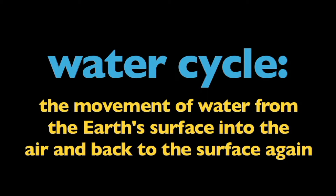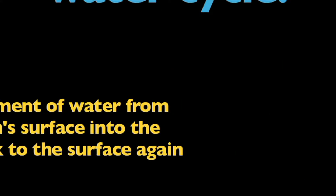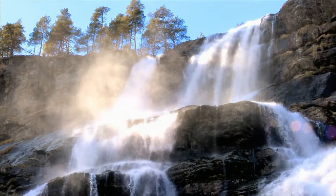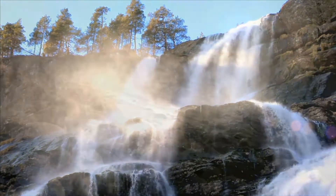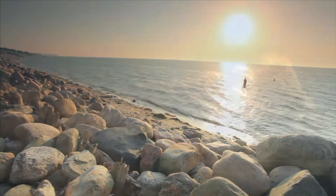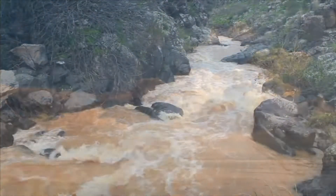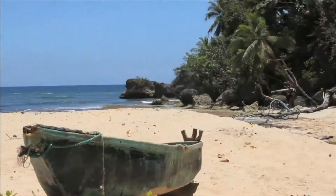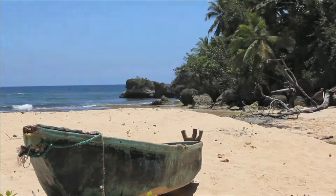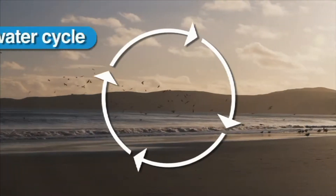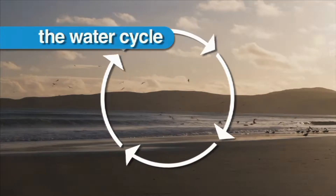In this program, we're going to talk about the water cycle. What is the water cycle? The water cycle is the movement of water from the Earth's surface into the air and back to the surface again. Water on our planet is always moving. Water moves from the oceans, to the clouds, to the land and rivers, then back to the ocean. This process, called the water cycle, is repeated over and over again.